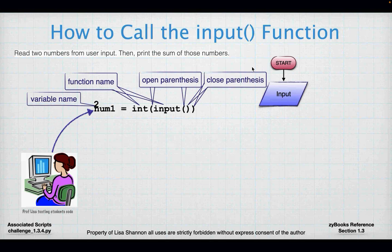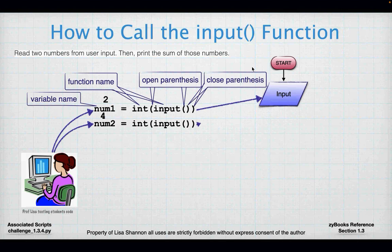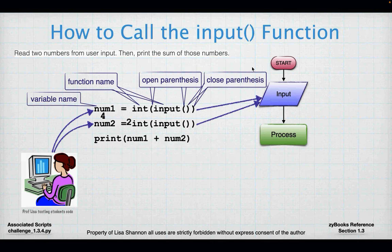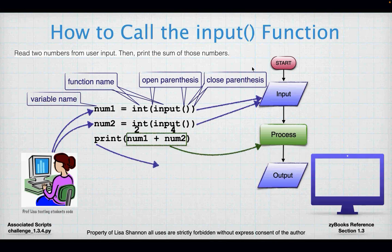I type in the number 2, then I have num2 — again I want it to be an integer, getting it from the console, and I type in 4. Now I'm going to process: I'm going to do something with 2 and 4. I print num1 and num2 — num1 has the value 2, num2 has the value 4. That's my process. Then I output the sum of num1 and num2 — that goes to the screen as 6, and my program ends.